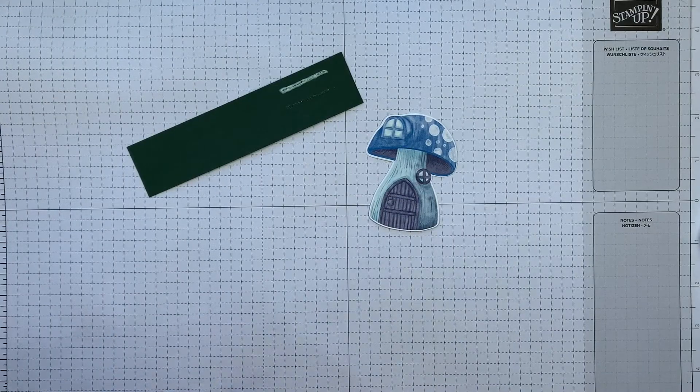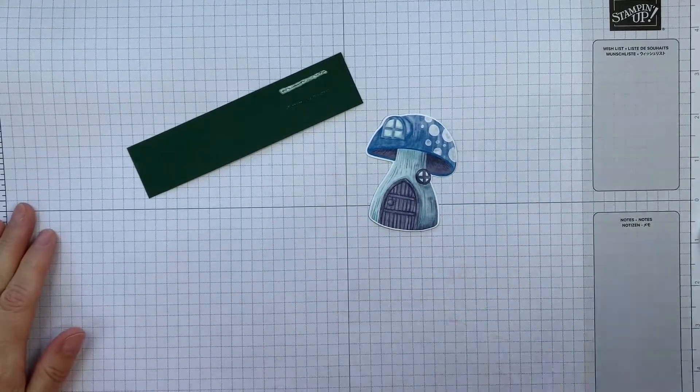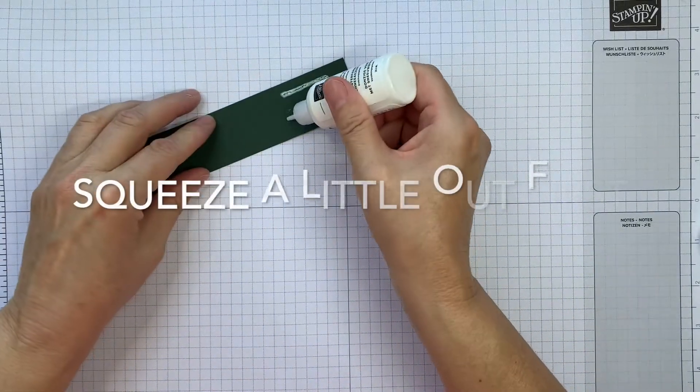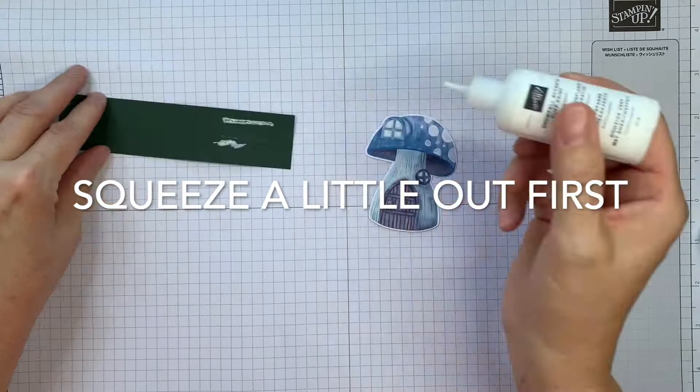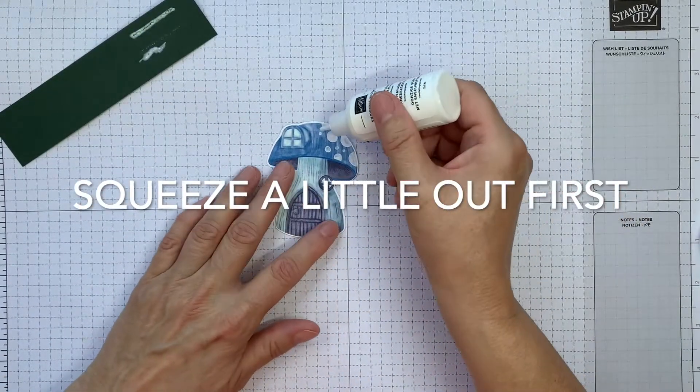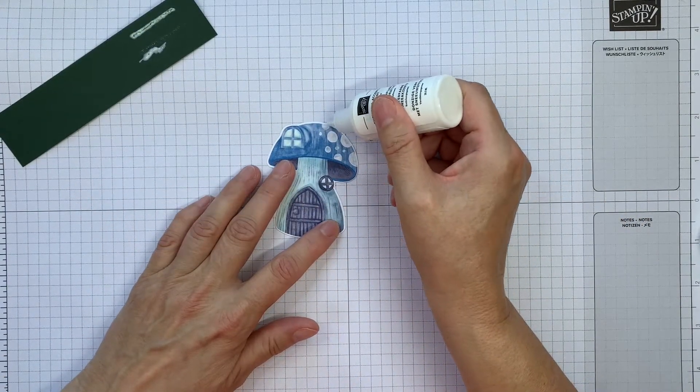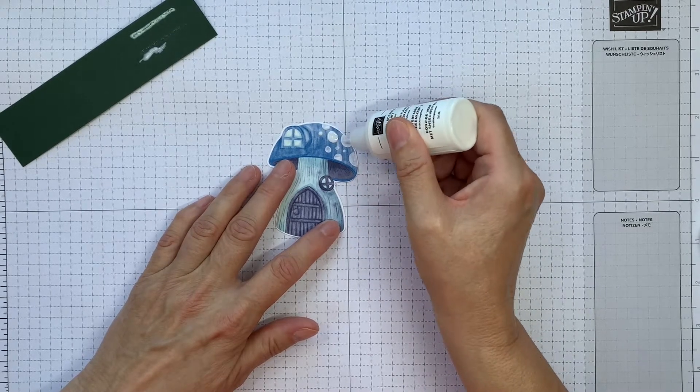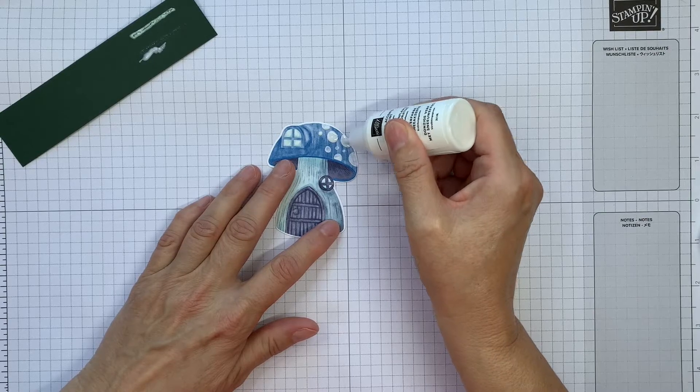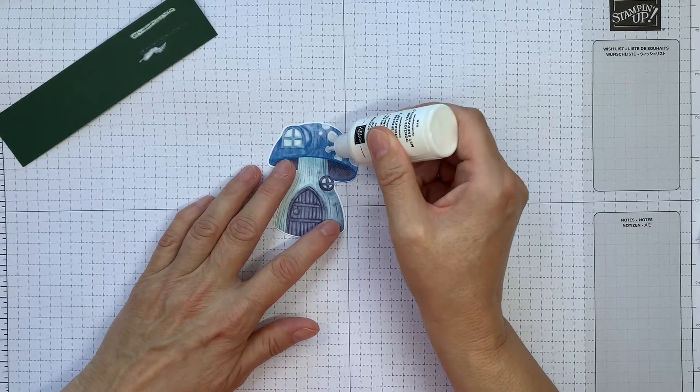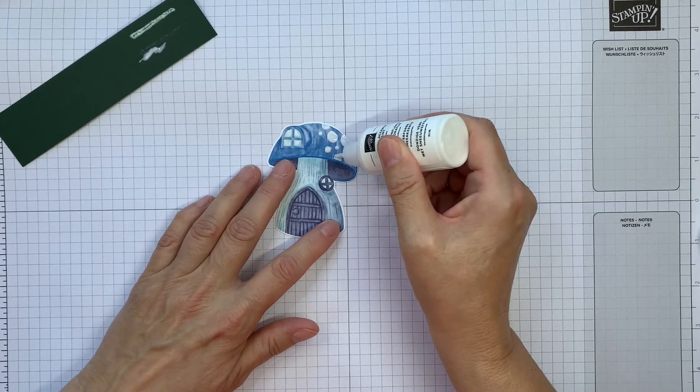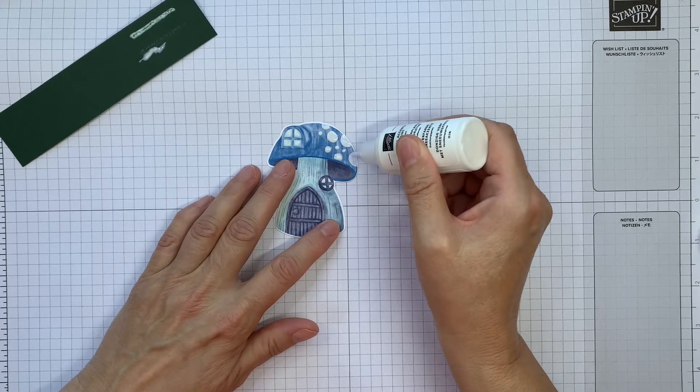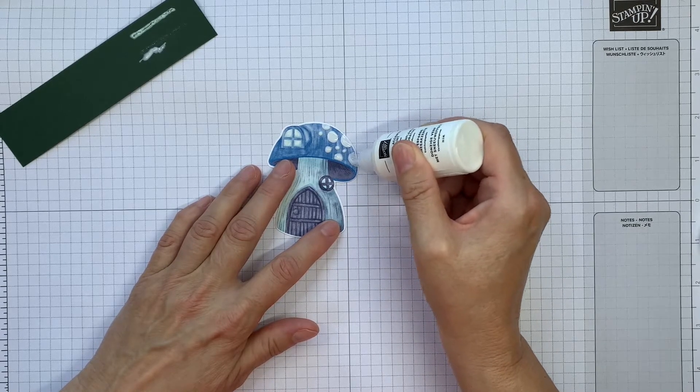So again I'm going to give it a quick shake and squeeze a little bit out of the end before I pop it on my house. I'm just going to cover these spots with the paint and I'm not being too precise, I'm not too worried about it.